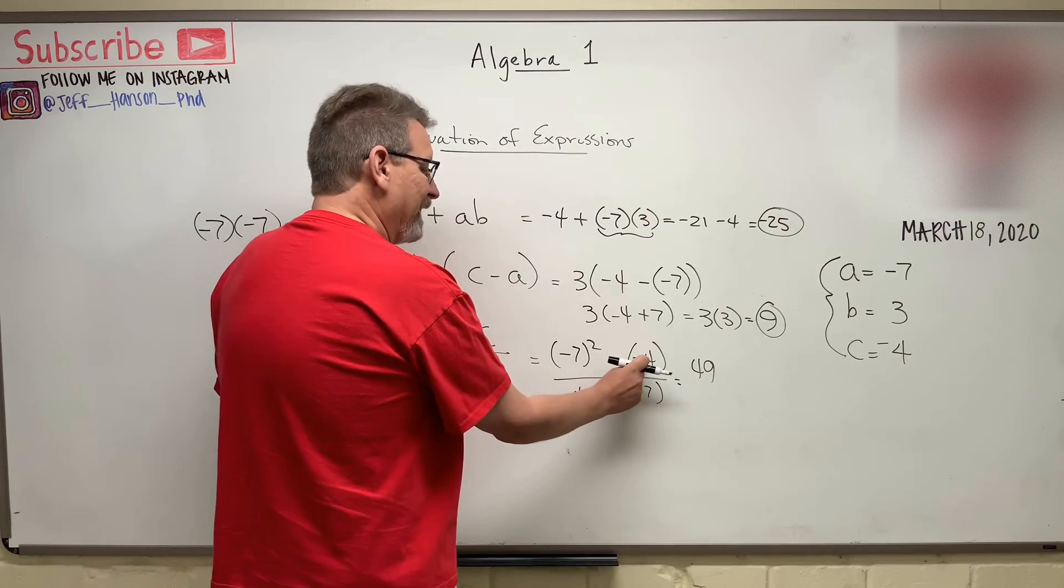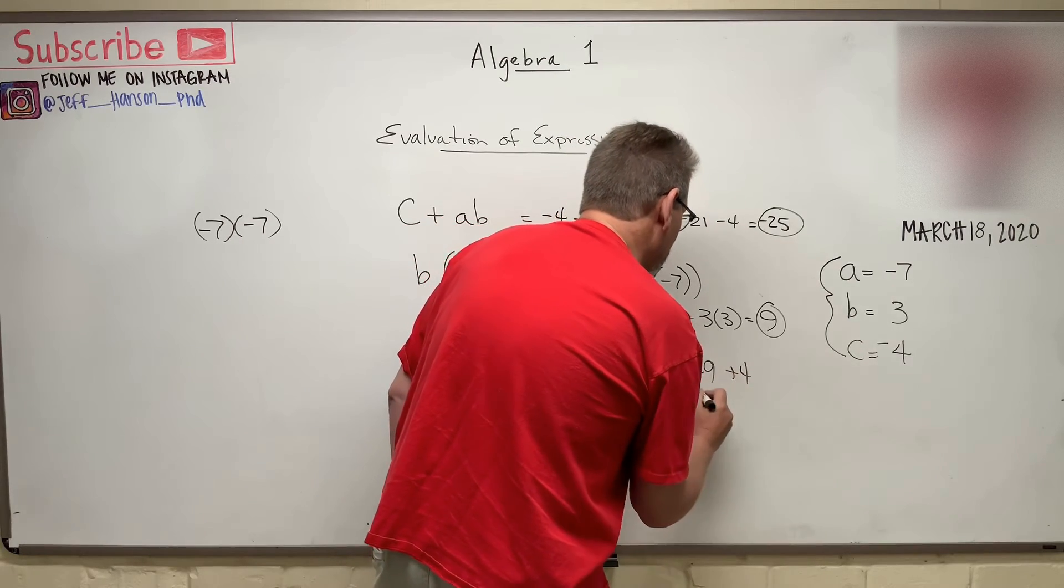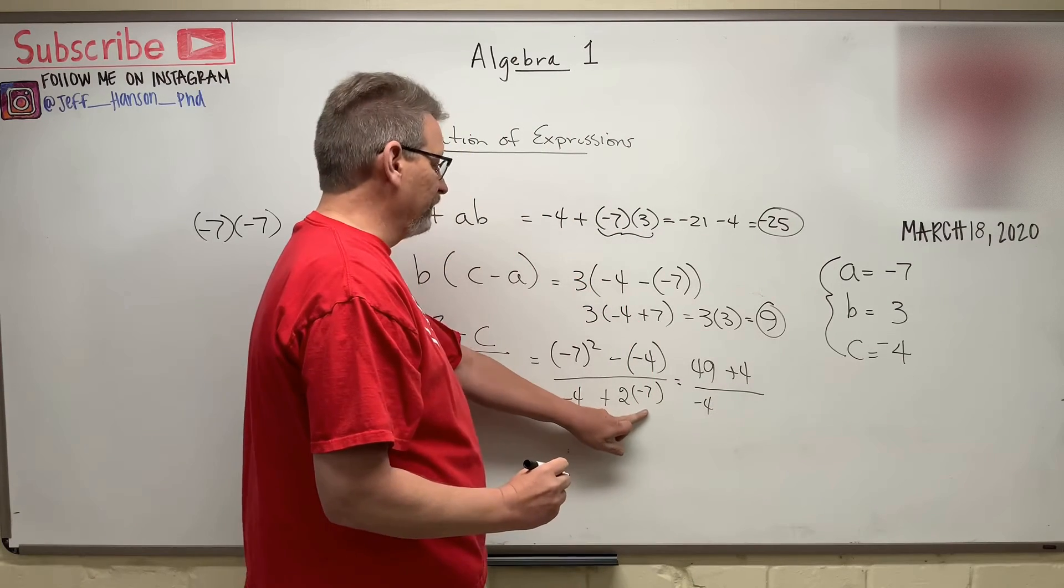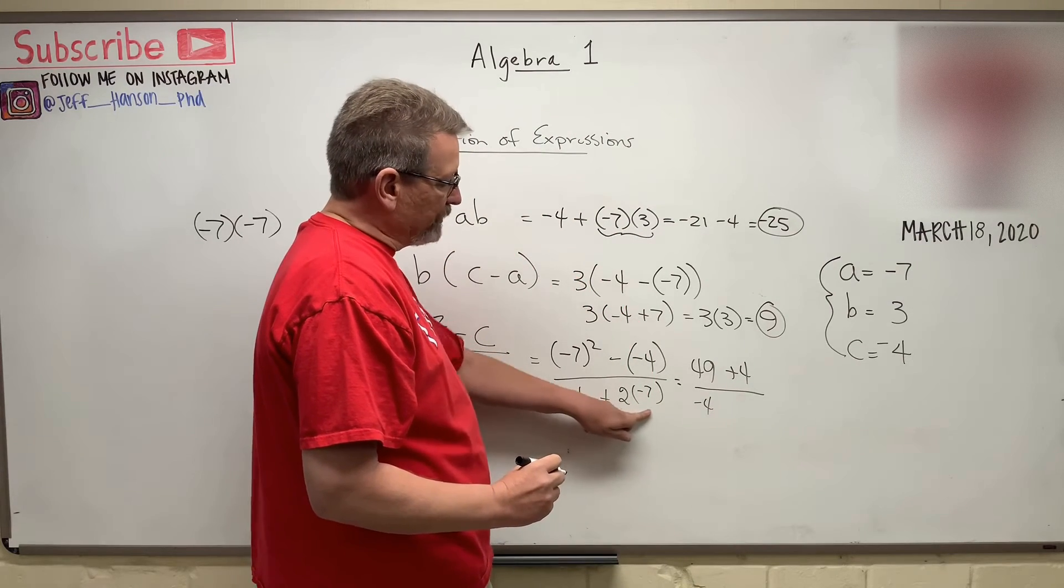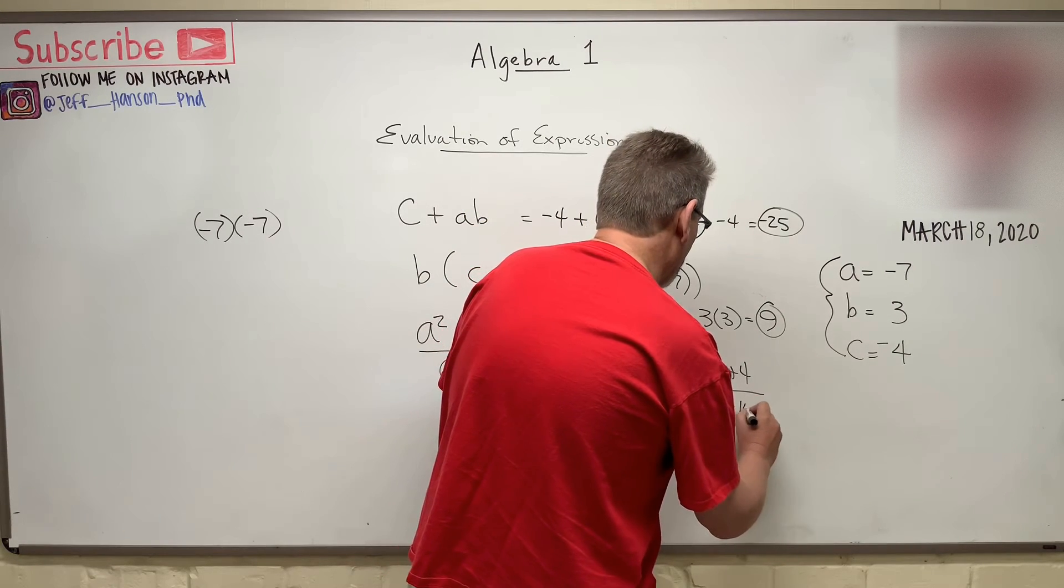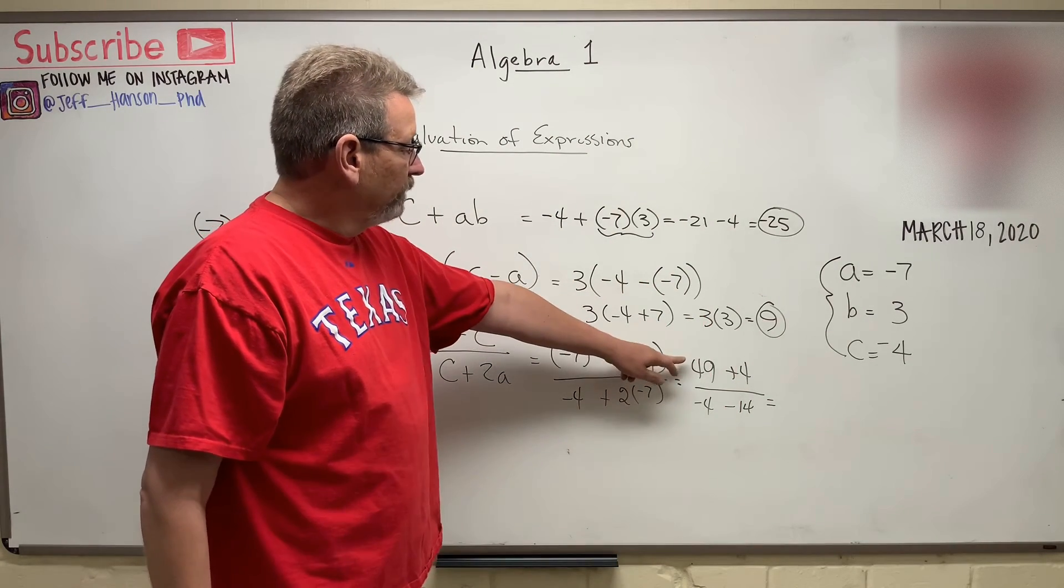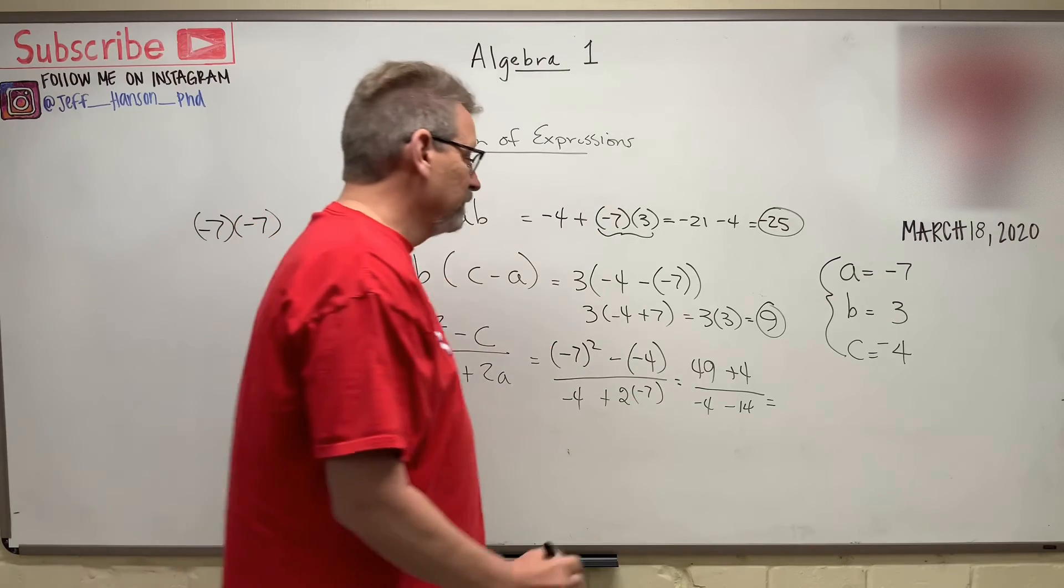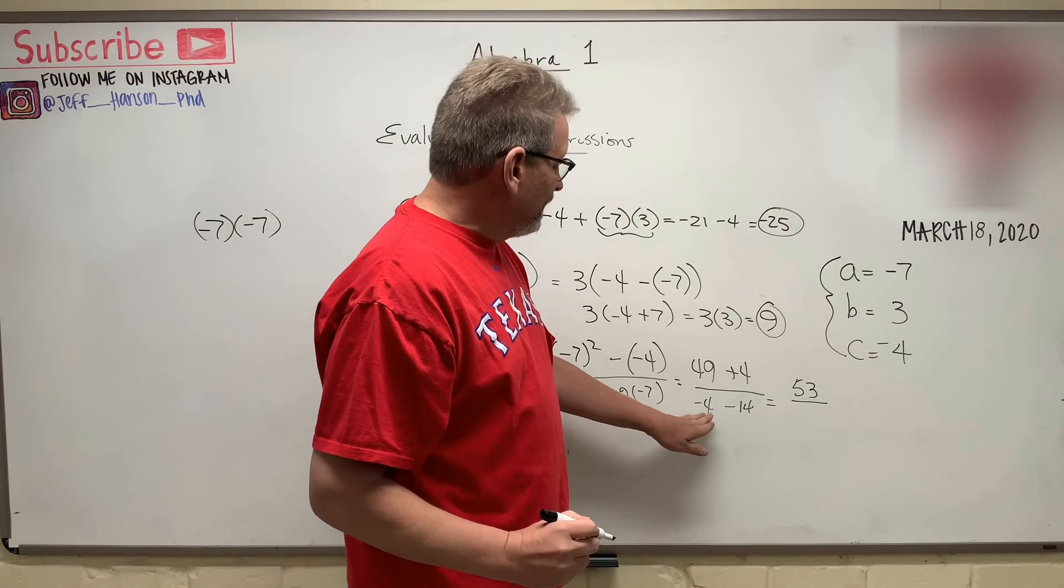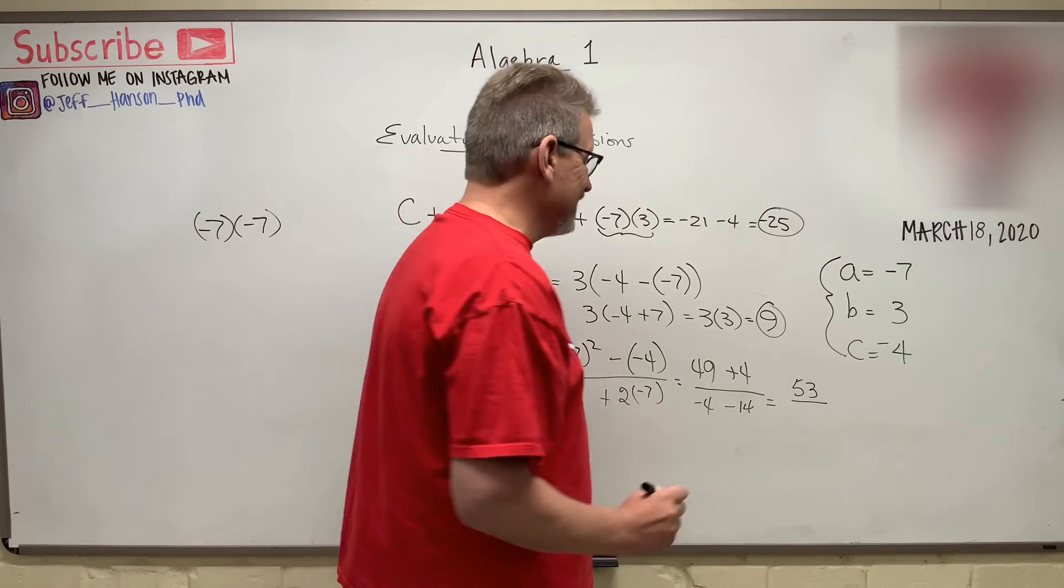And then what? Minus a minus becomes a plus, right? So plus four divided by minus four. And here's another parentheses, another multiplication. What is that operation there? Two times minus seven. That's minus 14, isn't it? Okay. And so what is that going to give me over here? 49 plus four is 53. Okay. And then negative four and then 14 negative more is negative 18, isn't it?